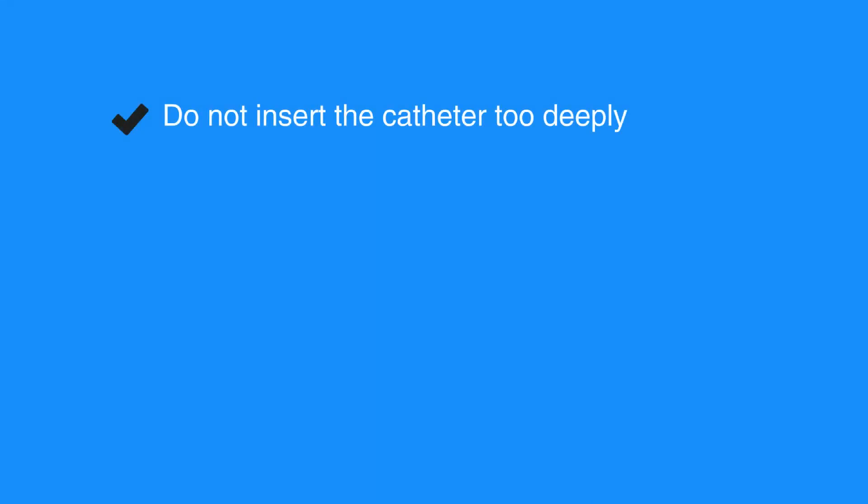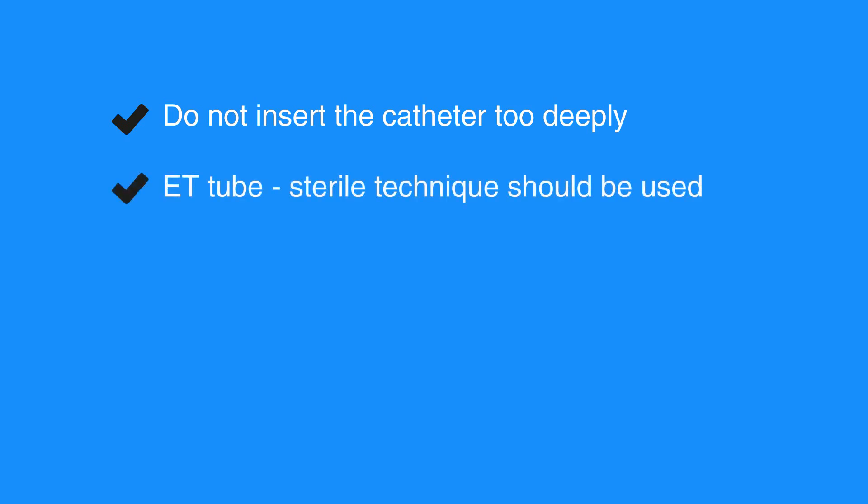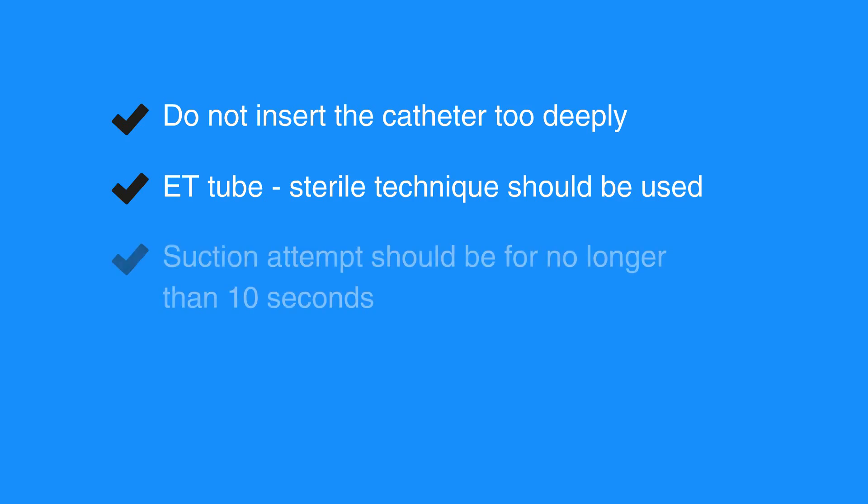Here are some tips on suctioning. When suctioning the oropharynx, do not insert the catheter too deeply. Extend the catheter to the maximum safe depth and suction as you withdraw. When suctioning an ET tube, remember the tube is within the trachea and you may be suctioning near the bronchi or lung. Therefore, sterile technique should be used. Each suction attempt should be for no longer than 10 seconds.